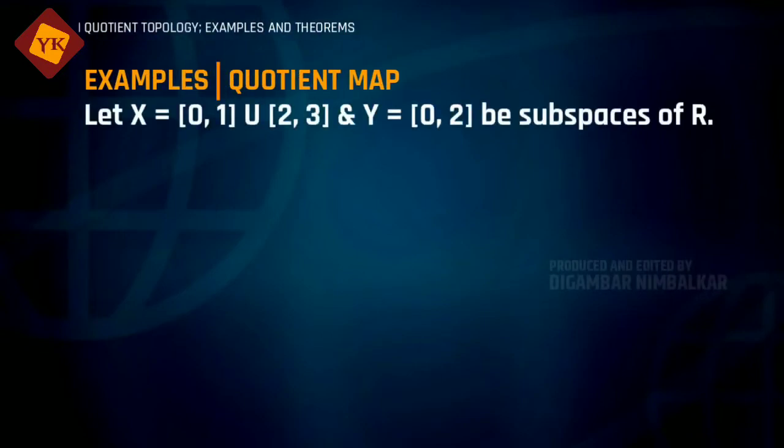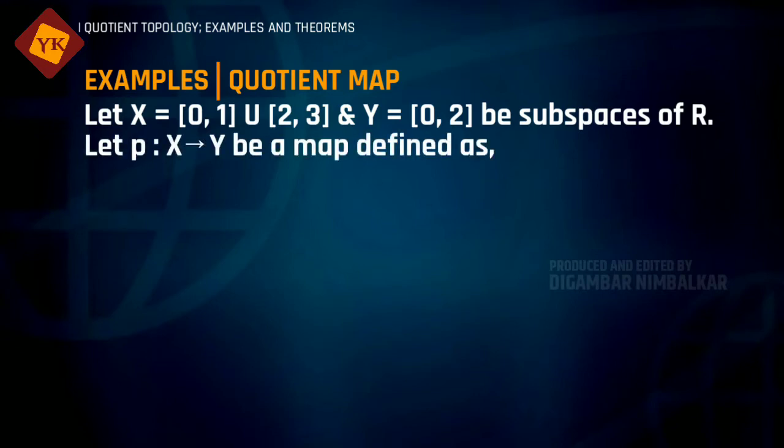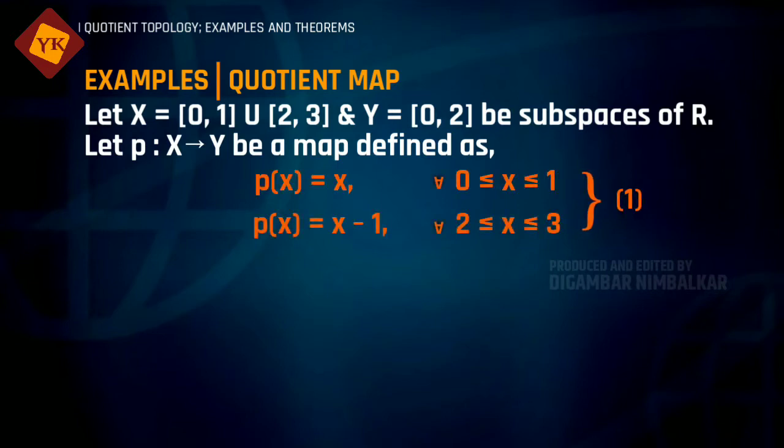If you consider X equal to the topological space [0,1] union [2,3] and Y equal to [0,2], and if you consider map p from X to Y which is defined as p(x) = x for all x belonging to [0,1] and p(x) = x - 1 for x belonging to [2,3], then we will show that this map is a quotient map.